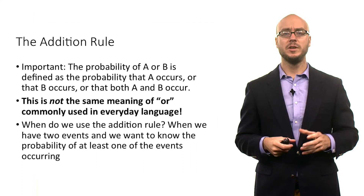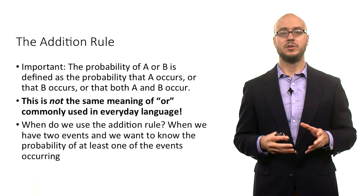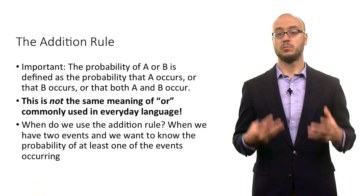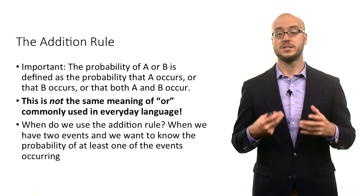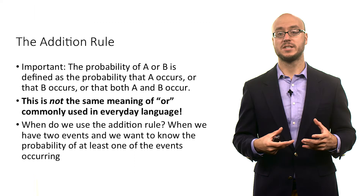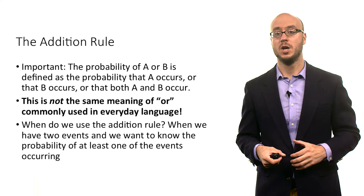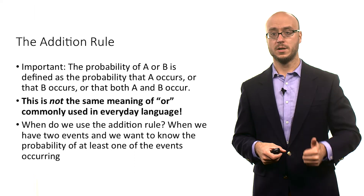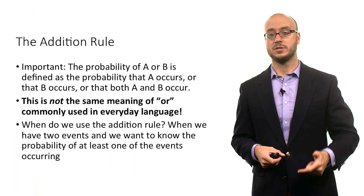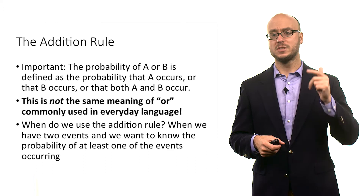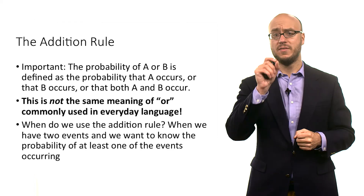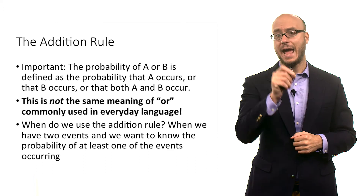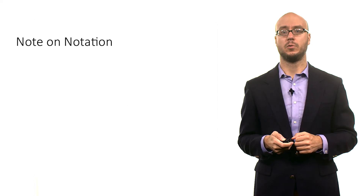So when do we use the addition rule? When we have two events and we want to know the probability of at least one of those events occurring. In this case, we want to know: what's the probability of being poor, what's the probability of not having health insurance, or what's the probability of having no health insurance and being poor?